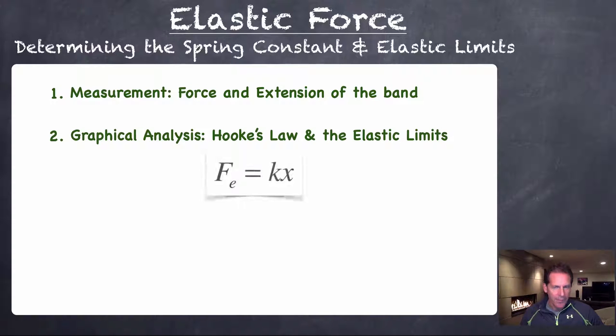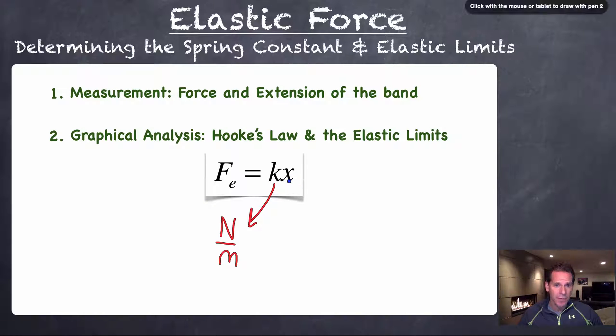Now remember Hooke's law, given by this equation here. Fe stands for the elastic force. K stands for the spring constant, which is measured in newtons per meter, and is a measure of how stiff or strong the elastic material is. X stands for the extension. That's not the length, but how much it's actually stretched or been compressed by, measured in meters. And notice your units would cancel here, leaving you with the value for the force in newtons.